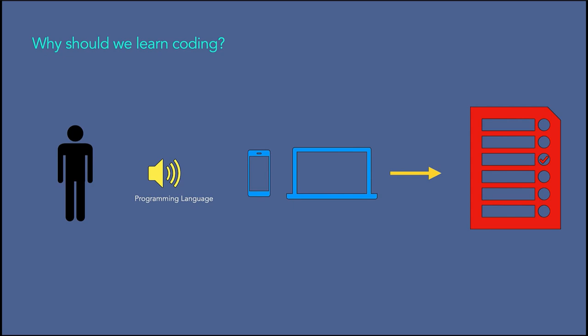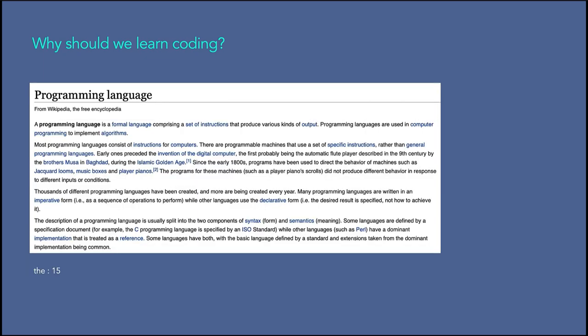Interestingly, the kinds of things computers can do best are often the kinds of things that we humans find boring and mind-numbing. For example, look at this text and tell me the most commonly used word and how many times it appears. While you were able to read and understand the text in a few minutes, counting the words is almost painful because it's not the kind of problem that human minds are designed to solve. For a computer, the opposite is true — reading and understanding text from a piece of paper is hard, but counting words is very easy. Our personal information analysis assistant quickly told us that the word 'the' was used 15 times in this text.